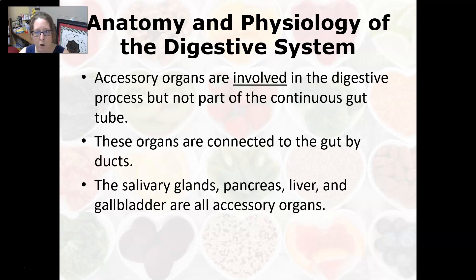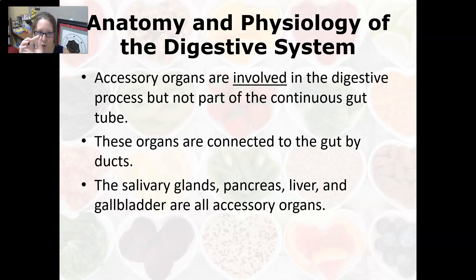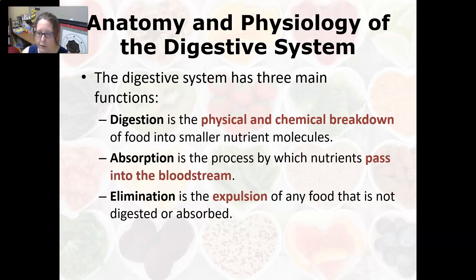The accessory organs are not part of the continuous gut tube and are connected to the gut by ducts, which are like mini tubes that put their secretions into the GI tract. The salivary glands, the pancreas, the liver, and the gallbladder are all the accessory organs of the gastrointestinal system.